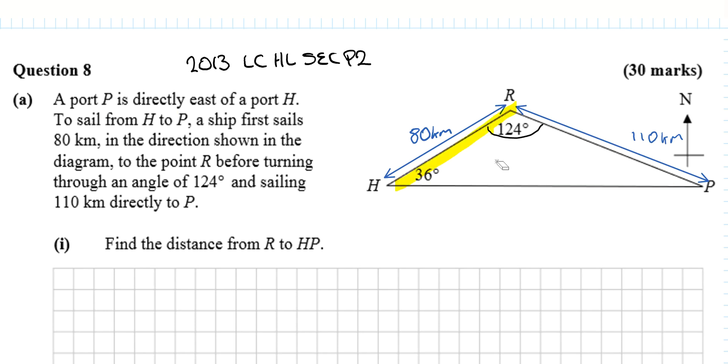The ship sails 80 kilometers in the given direction, then turns through an angle of 124 degrees. I have an issue with that because the angle it actually turns through is 56 degrees.